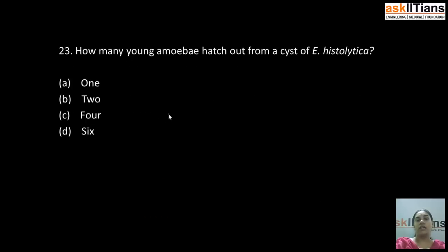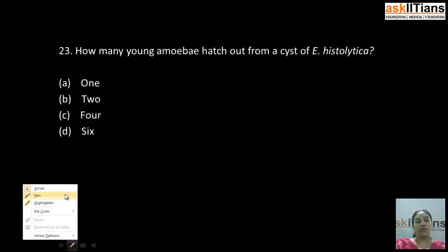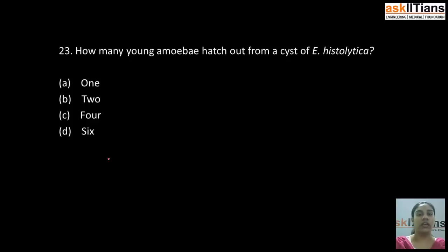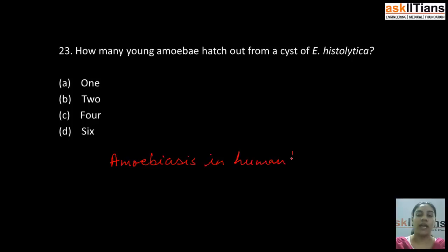Our next question is: how many young amoeba hatch out from the cysts of Entamoeba histolytica? A) 1, B) 2, C) 4, D) 6. The correct answer is A: 1. Only one young amoeba hatches out from a cyst of Entamoeba histolytica. Entamoeba histolytica causes amoebiasis in human beings; amoebiasis is the disease caused by Entamoeba histolytica.